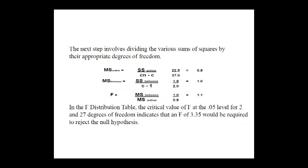Next, calculate MS (mean sum of squares). MS within equals SS within divided by the degree of freedom within (cn minus c). SS within is 22.5 divided by (3 groups × 10 observations minus 3) = 3×10 minus 3 = 27. So MS within equals 22.5 divided by 27, which gives 0.8. MS between: degree of freedom is c minus 1 equals 3 minus 1 equals 2. So 1.9 divided by 2.0 gives a value of approximately 1.